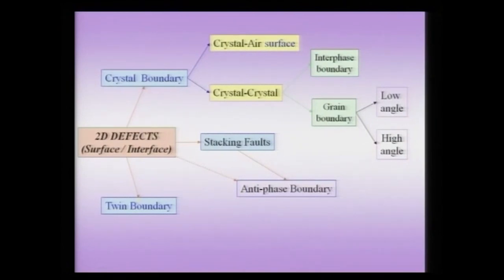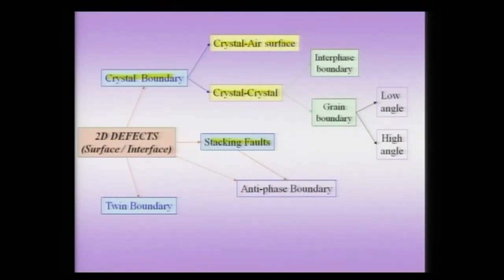If you are looking at two-dimensional defects, you can have a crystal boundary, and this crystal boundary can be a crystal-vacuum interface which we call a surface, or it can be a crystal-crystal interface. Apart from this, there are stacking faults which are two-dimensional defects, and there are twin boundaries. A special kind of stacking fault is also called an anti-phase boundary, and we will consider that at a later point during these lectures.